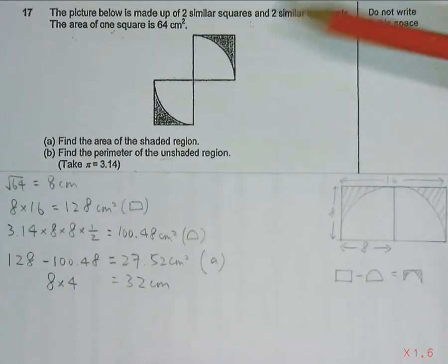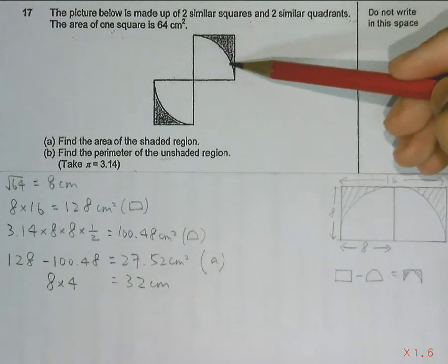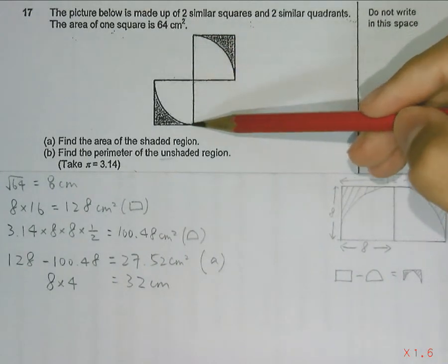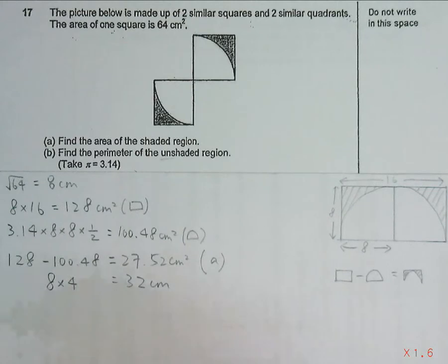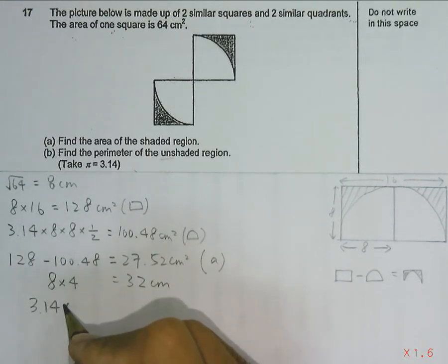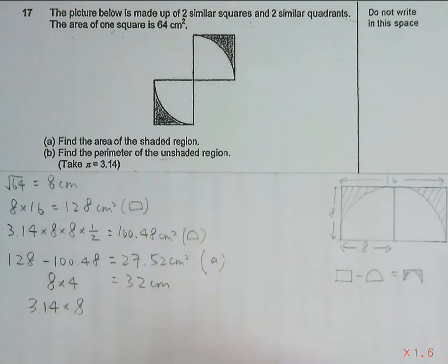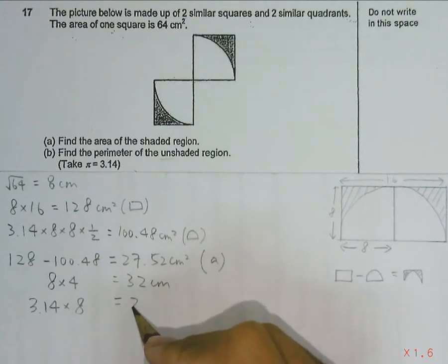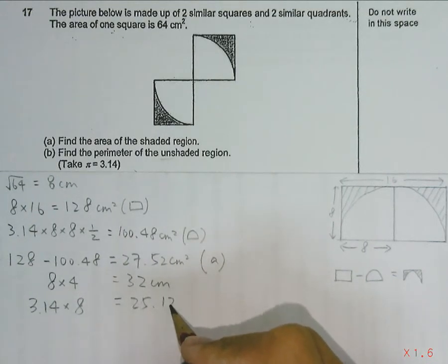For the curved side, these two sides will add on to give us half of the circumference of the circle, which can be found by π times the radius of the circle. So this will be the sum of the two curved sides, and it will equal 25.12 cm.